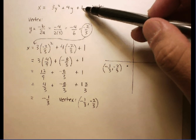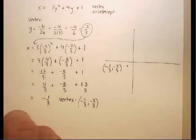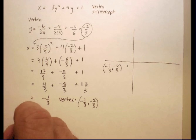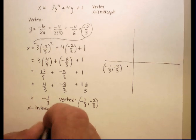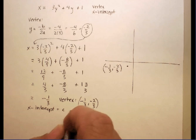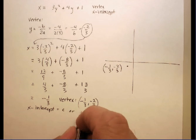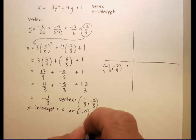And the c, in this case, is a positive 1. So down here, I'm going to write the x-intercept is equal to the c or 1, 0.